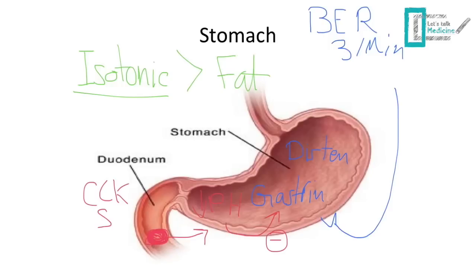A clinical note on the stomach: patients with diabetes can develop diabetic neuropathy. If it affects the vagus nerve, it will cause bloating — because decreased stomach motility means the stomach becomes distended — and constipation, because motility in general is decreased when the parasympathetic is not working.